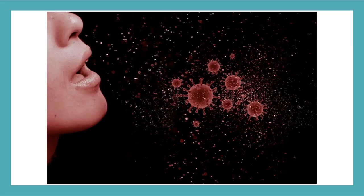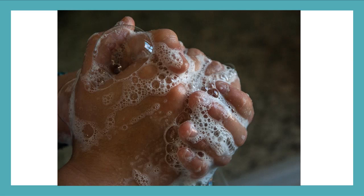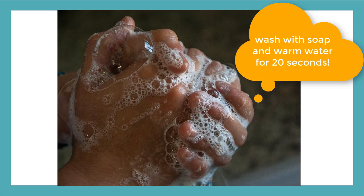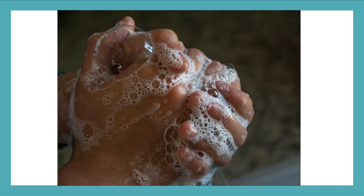So how can we make sure we don't transmit pathogens or get sick from them? The best way is to wash hands. Make sure you wash with soap and warm water and keep scrubbing for 20 seconds. Try to sing happy birthday two times while you're washing your hands. And don't forget the backs of your hands, your thumbs, and the space between your fingers.